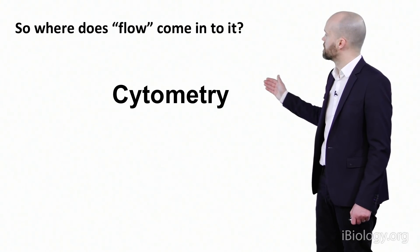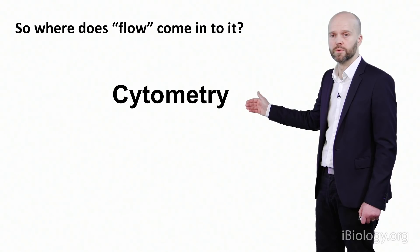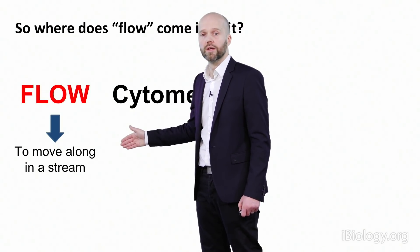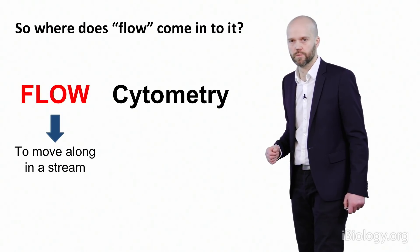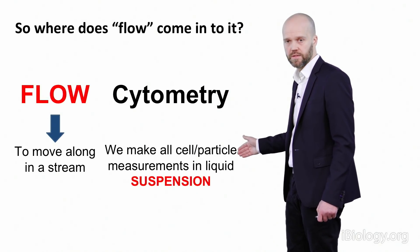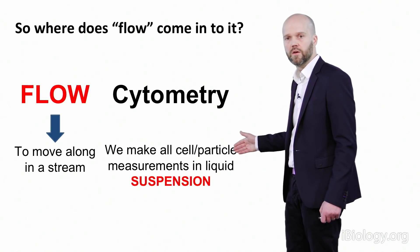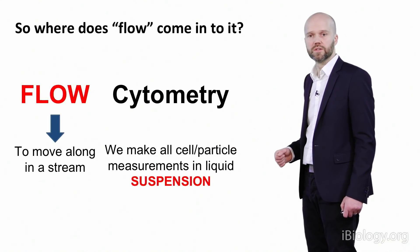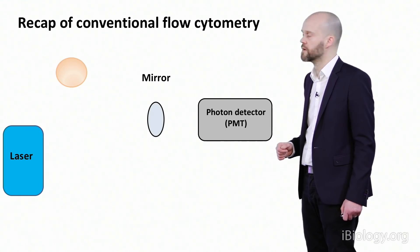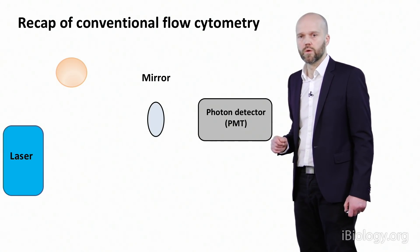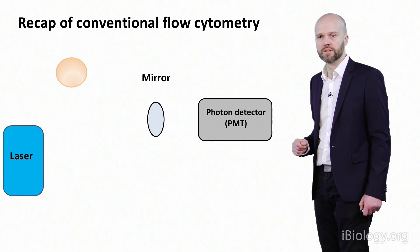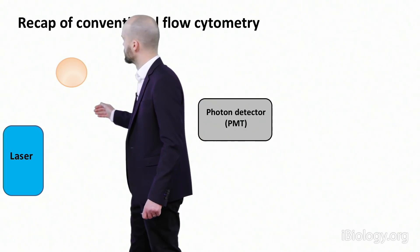If I put the word 'flow' in front of cytometry, it defines as moving along in a stream, giving us a clue about how we make our cell measurements. In flow cytometry, all cell or particle measurements are made in liquid suspension. This is easy for liquid biopsies like blood or suspension cell lines, but if working with tissue, you must first disaggregate it down to a single cell suspension. I'd like to refer you to another iBiology cytometry talk by Malta Paulsen on conventional fluorescence-based flow cytometry.